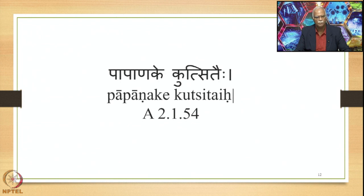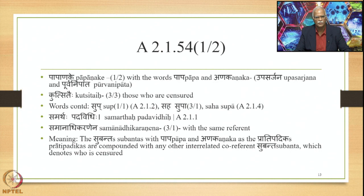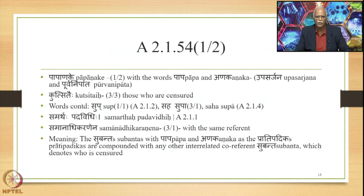We proceed to sutra 2.154: Papanake Kutsitaihi. This sutra has two padas: Papanake and Kutsitaihi. Papanake is Prathama Dvivachana with the words Papa and Anaka. Since stated in Prathama, the sutra Prathama Nirdishtam Samasa Upasarjanam terms them Upasarjana, and Upasarjanam Purvam ensures Papa and Anaka occupy the initial position of the compound. Kutsitaihi is the instrumental plural meaning 'those who are censured.'